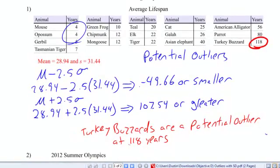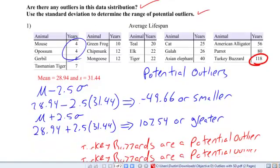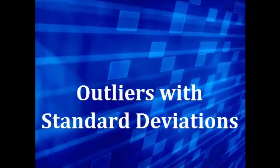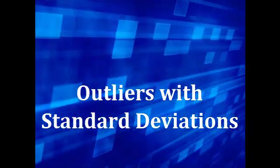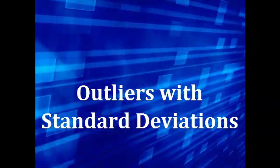Notice I gave the name of it, I gave the units, I said there are potential outliers. So let's go back. Did I answer both of my questions? Are there any outliers? Check, I did. I said there's Turkey Vultures. Use a standard deviation to determine the range. I did that. My ranges are right here and right here. So that's how you do it.